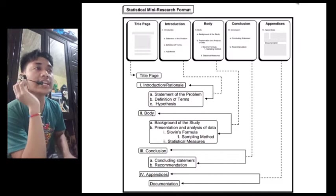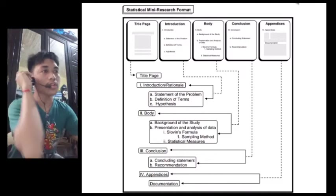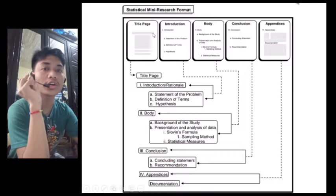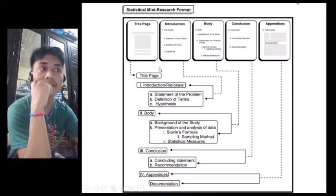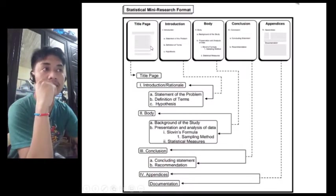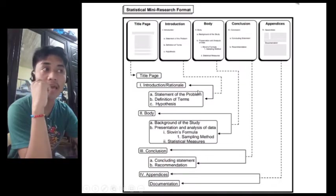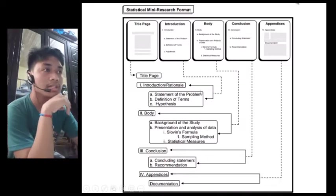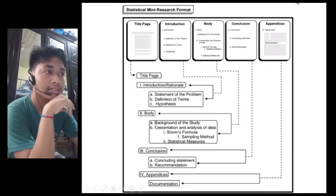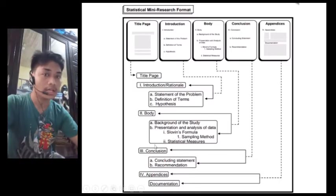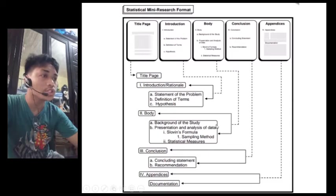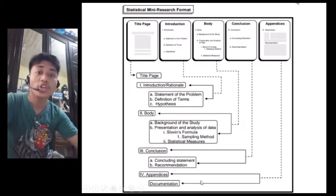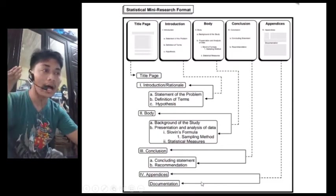This is the part of statistical mini research format. In your first page, you are going to indicate the title. Then, the second page indicates the introduction or rationale. Then, the third page contains body. It is subdivided into two. And, conclusion and appendices or documentation, the pictures.